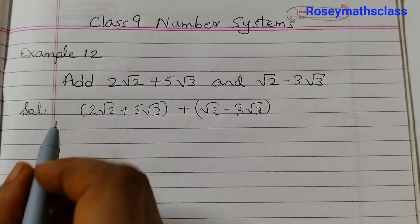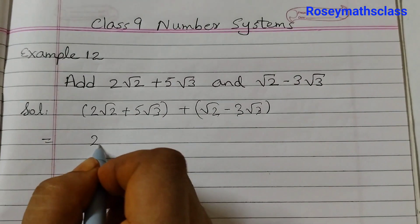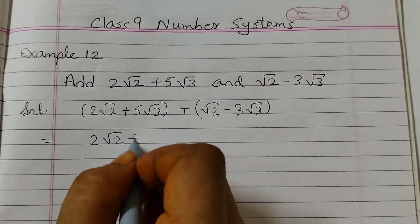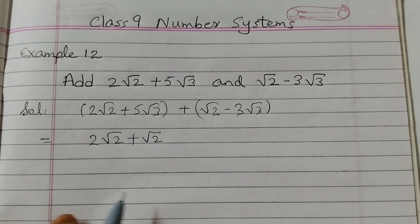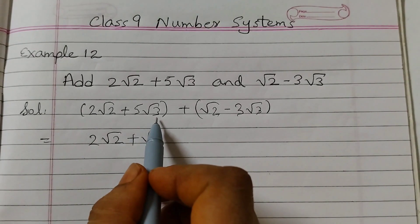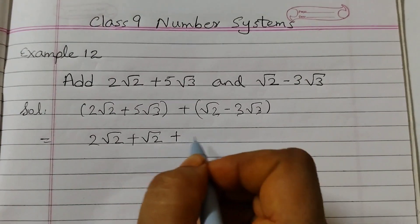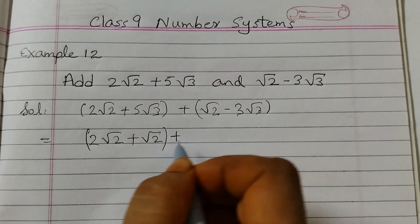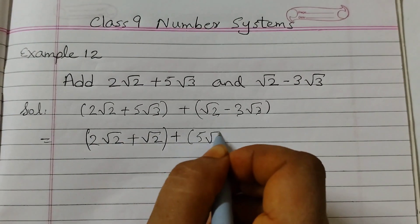So equals to 2√2 + √2—we're just writing it together. And this is √3 and √3, so plus, put a bracket here: 5√3. And there's a minus sign before this, so minus 3√3.